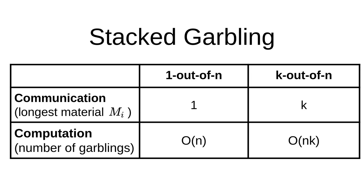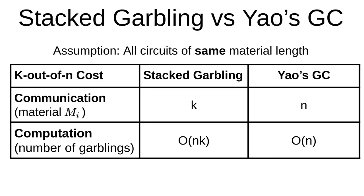The stack garbling technique can be generalized to arbitrary k. While the communication improvement is preserved — that is, the communication cost is proportional to k rather than n — naively extending this technique to k out of n circuits incurs a factor k increase in computation. That is, computation cost grows with k. Hence, there seems to be an inherent trade-off between computation and communication with the current techniques: stack garbling reduces communication consumption but increases computation consumption.